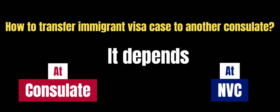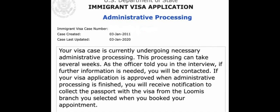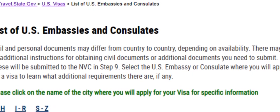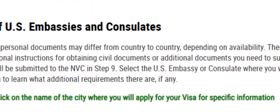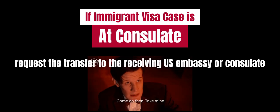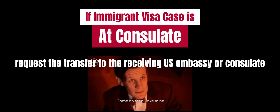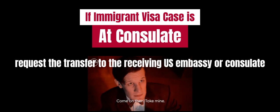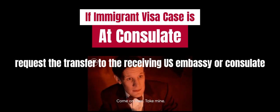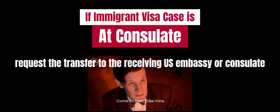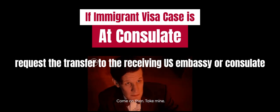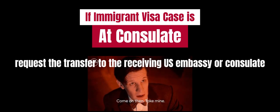It depends on where your case is at. If your immigrant visa case is already at a U.S. Embassy or consulate, you will need to contact the potential receiving U.S. Embassy or consulate in writing to request a transfer of your case. In the request, you should include a justification for the transfer. If you are not a resident of that country, you need to specify the visa type and period of staying. If you are a resident of that country, you need to specify evidence of your residency.